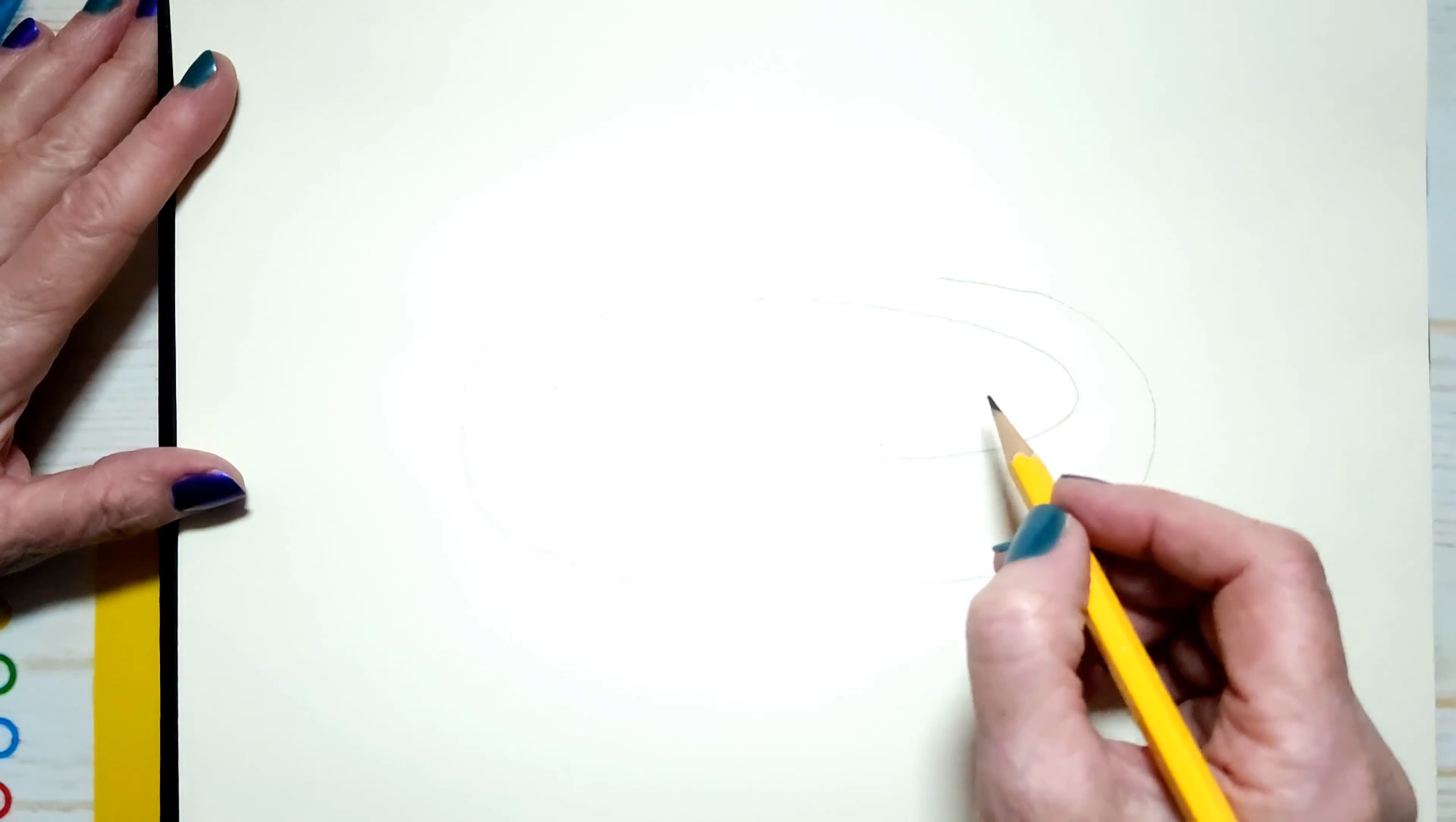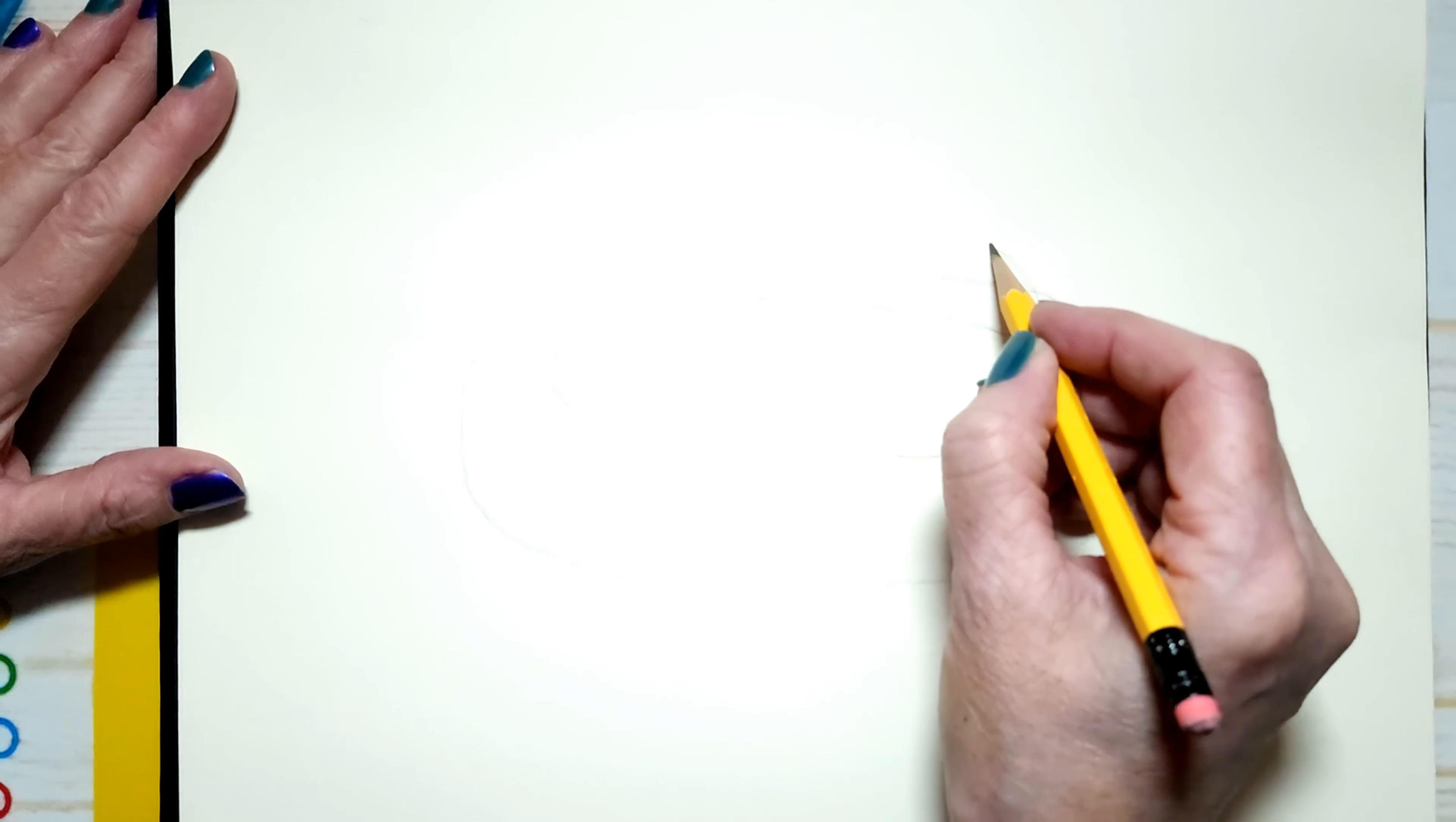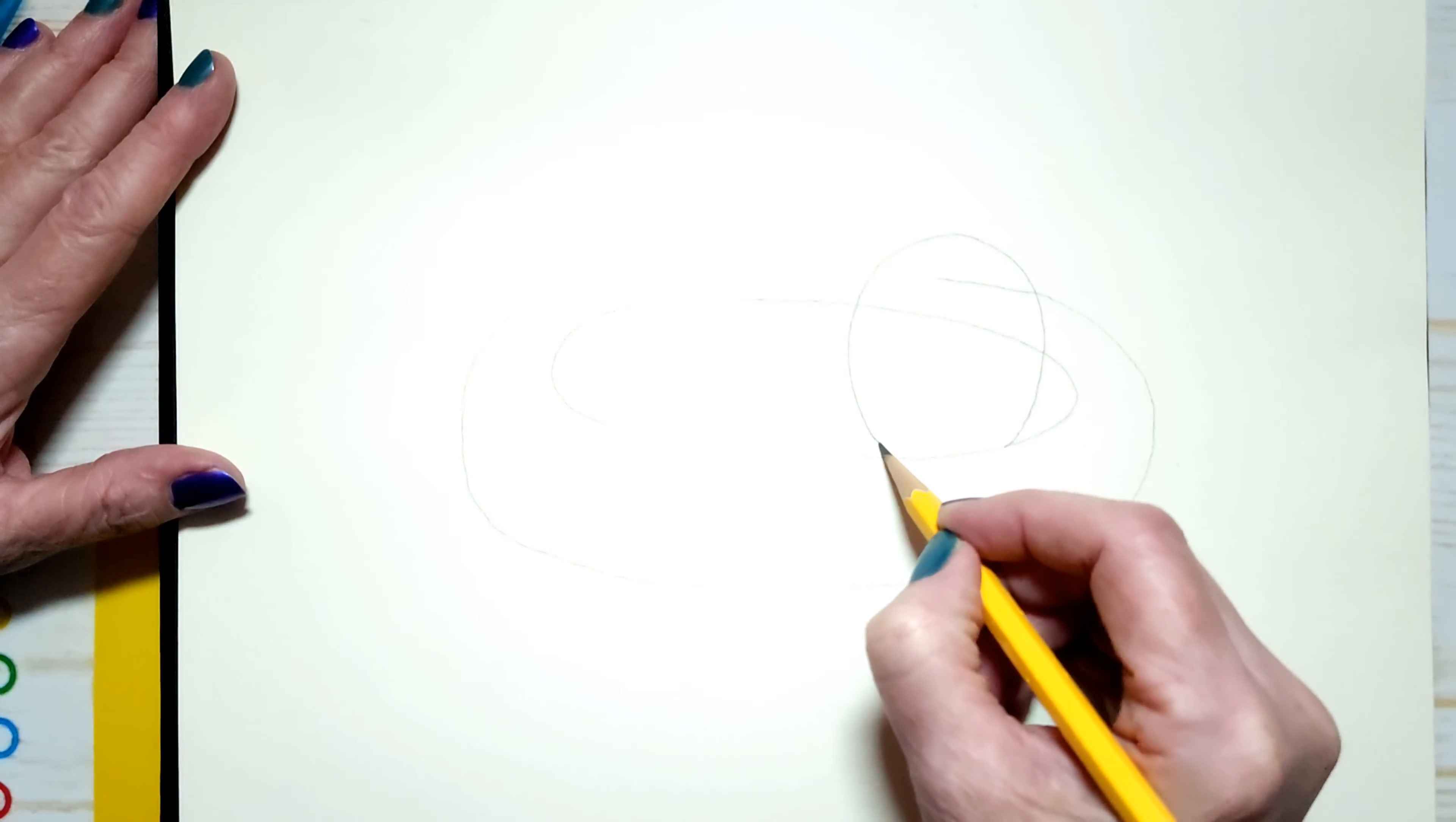And what I want to do is add my eggs right away. I'm going to do three eggs, and we're going to erase a little bit here. So this is one egg like this.